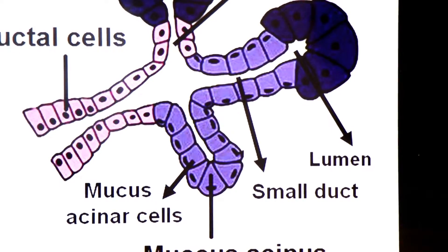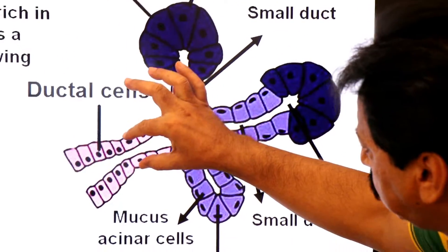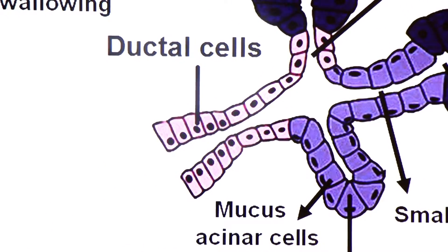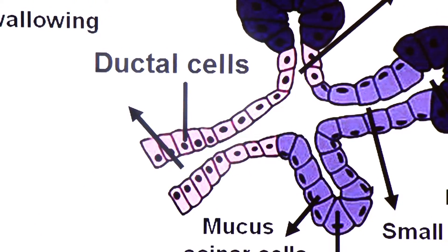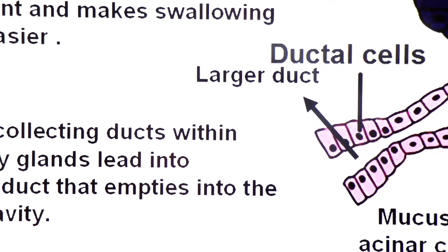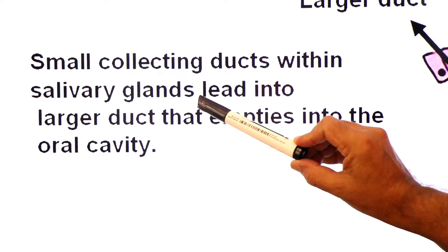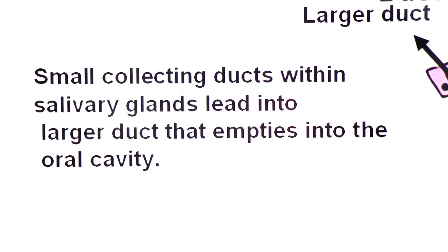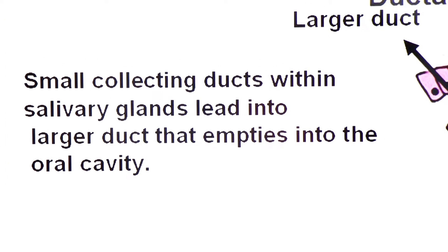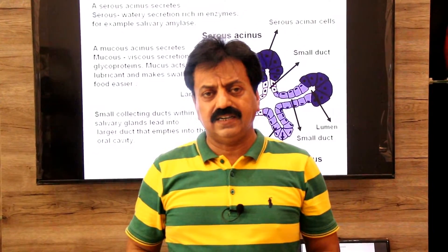The secretion is first released into smaller ducts, and these merge to form a larger duct. Smaller collecting ducts within the salivary glands lead into a larger duct that empties into the oral cavity. That covers the structure of salivary glands.